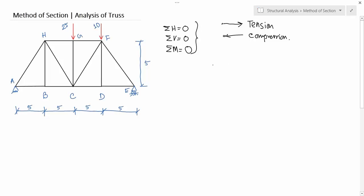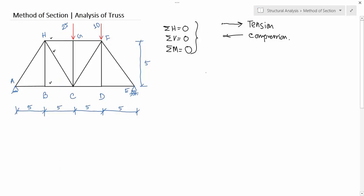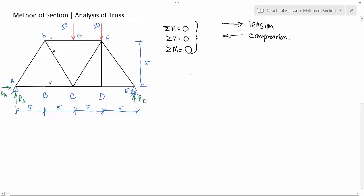In this example we will solve for these member forces. The section should pass like this — this is section XX. Before going into the detailed method of sections analysis, you first have to determine the reaction forces of the whole structure. This is a pin joint, so there will be two reaction forces: RA horizontal and RA vertical. This support at C is a roller, so there is only a vertical reaction.